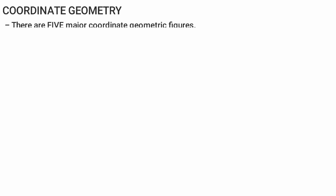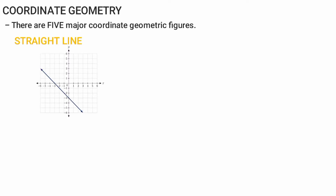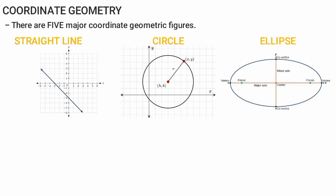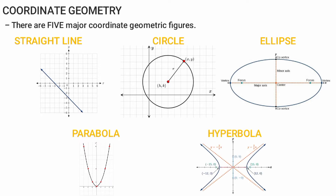This is geometry. This is a cornered geometry. Two-dimensional geometry. This is a straight line. This is a circle. This is an elliptical figure. This is a parabola. This is a hyperbola.